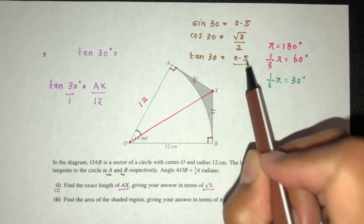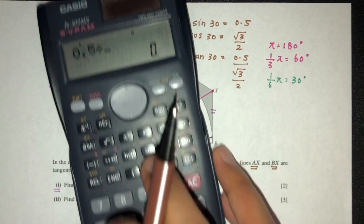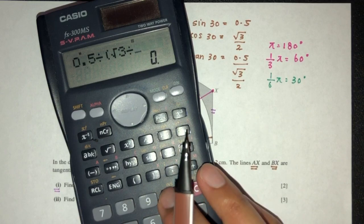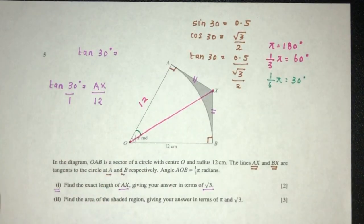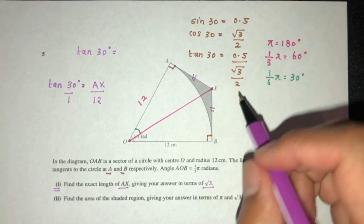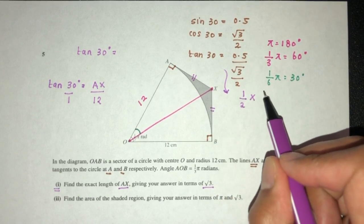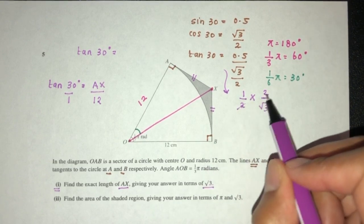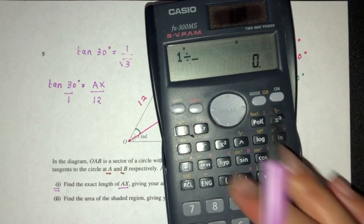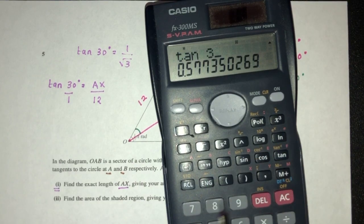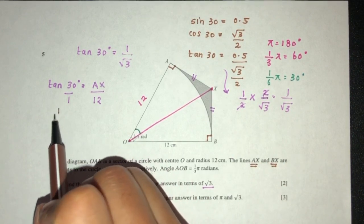So 0.5 divided by √3 divided by 2. We have 1/2 divided by √3 over 2. Divide becomes multiply, and you have 2. So we have 1 over √3. We can check: 1 divided by √3 is this value. So tan 30 is 1 over √3, a way to derive the exact value as well.